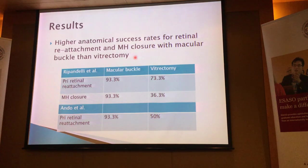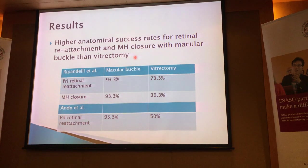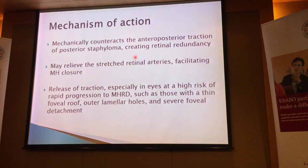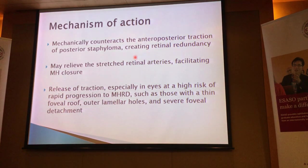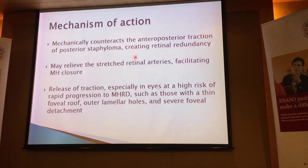Higher anatomical success ranges for retinal reattachment as well as macular closure — in a range of about 90% in different studies — as opposed to vitrectomy, which can range from 40% to 50%, or as high as sometimes 70%. What is the mechanism of a macular buckle? We believe that it mechanically counteracts the anterior-posterior traction along the posterior staphyloma. What you want to do is create retinal redundancy — more retina — so that the existing retina can relax and stop stretching so much. It's also believed that it may help relieve the stretch of the retinal arteries so that the macular hole can also close more easily.